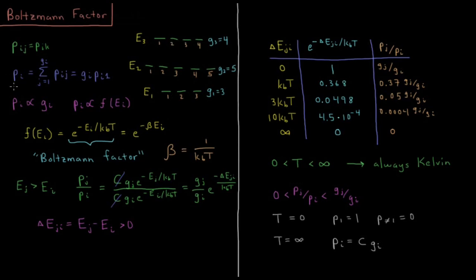This means that the probability that we observe a given energy level is a sum over all of the states in that energy level up to its degeneracy of the probability of each of those states, and since each of them is equally likely, it's the degeneracy times the probability of the first state in that energy level. So the probability that the system has energy E2 is proportional to the degeneracy of that energy level — proportional to the number of states in that energy level.